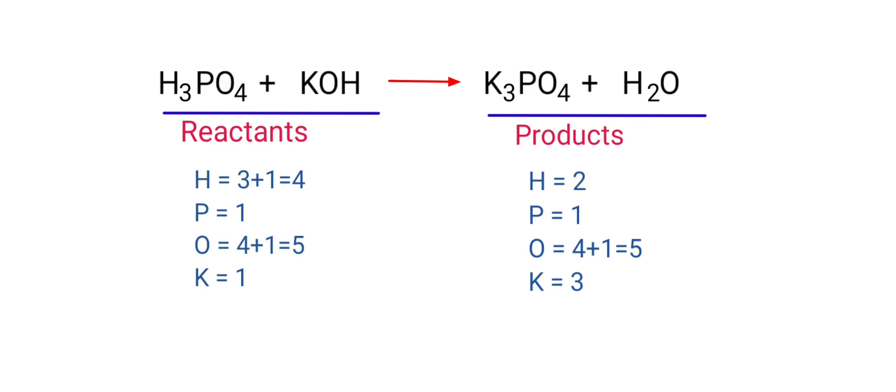If you look at this equation, the equation is not balanced. In the reactants side, there are 4 hydrogen atoms, 1 phosphorus atom, 5 oxygen atoms, and 1 potassium atom present. On the products side, there are 2 hydrogen atoms, 1 phosphorus atom, 5 oxygen atoms, and 3 potassium atoms present.